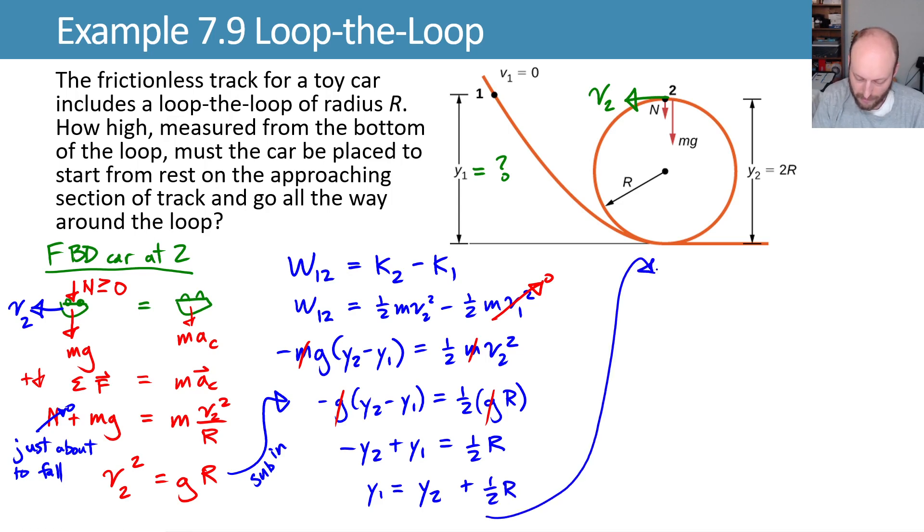Go ahead and continue up here. We know that y2 is equal to twice r because it's double the radius of this loop. So that's 2r plus 1/2 r. 2r is 4 halves r, so we get y1 being equal to 5 halves r.